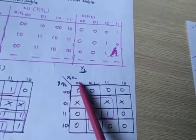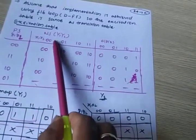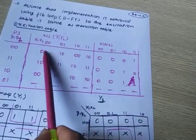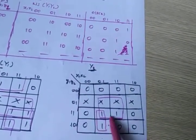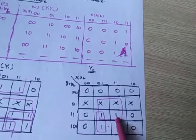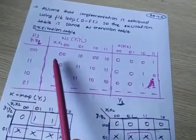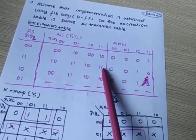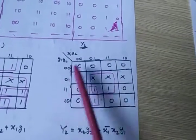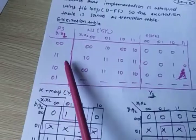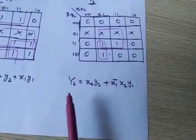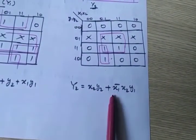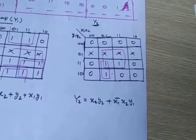Similarly for Y2, draw the K-map and consider the second letter of each next-state entry. For state 0,0 all entries are 0. For state 1,1, the next state second letter is 1, so fill those as 1. The 0,1 states are completely don't-care. After reducing the K-map you get: Y2 = x2·y2 + x1̄·x2·y1.